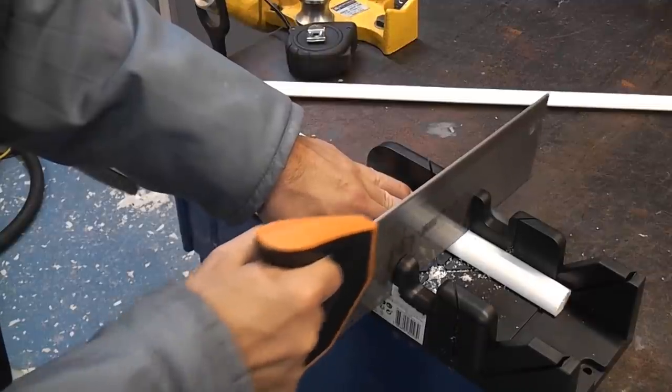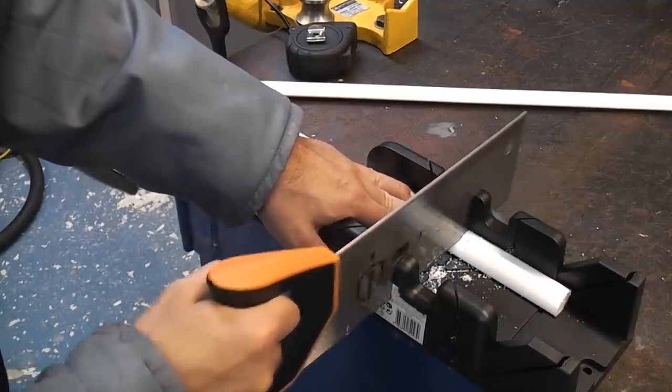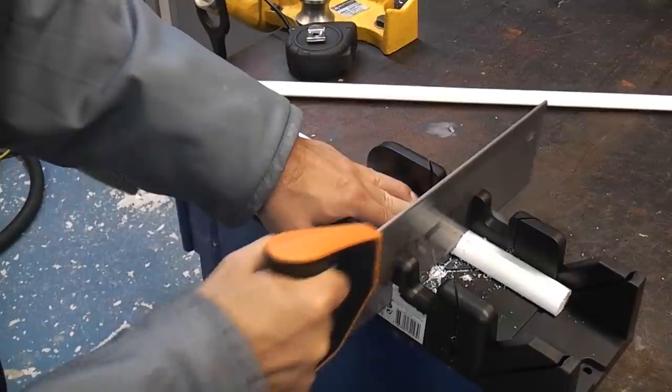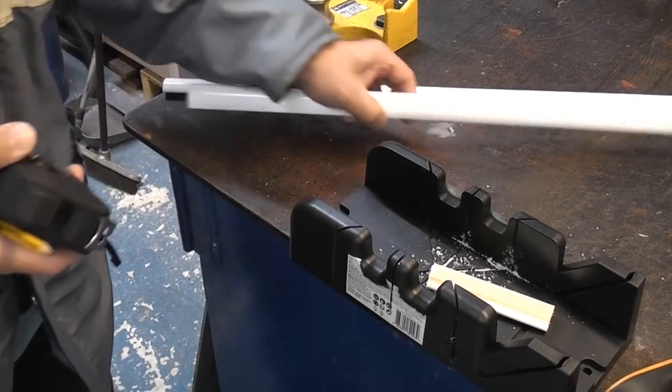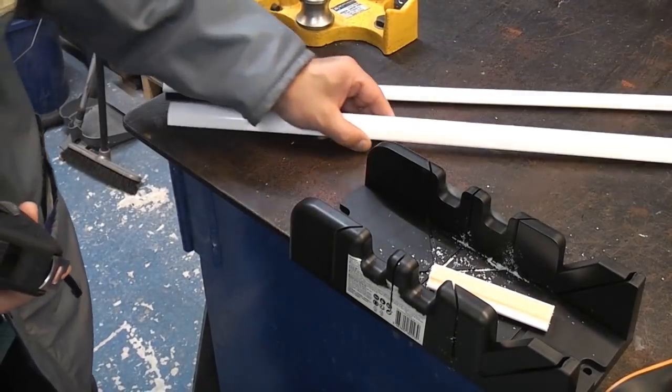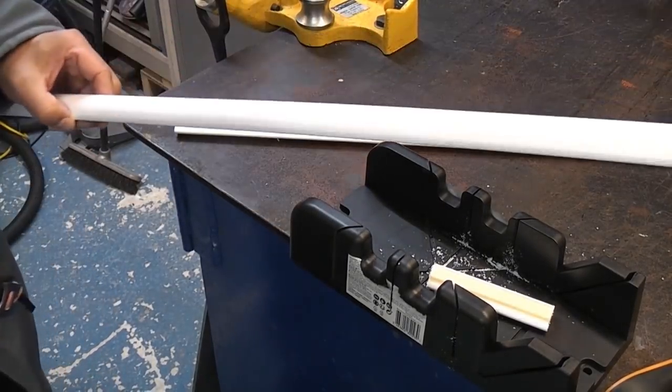This time we're going to cut this at 90 degrees in the miter block. So that one is 845 millimeters long and this one is going to be 860.